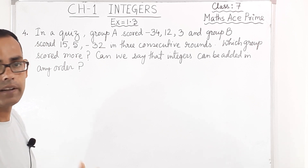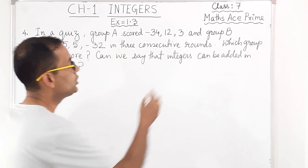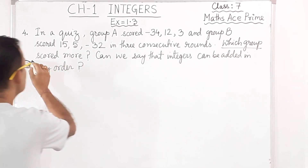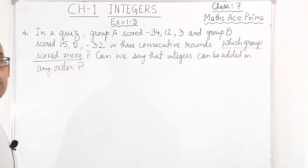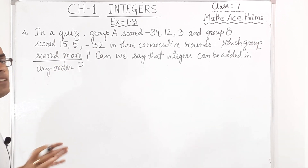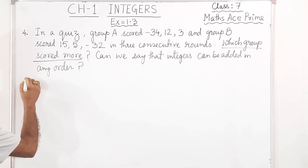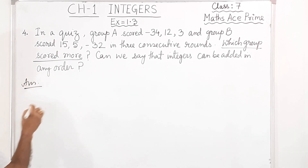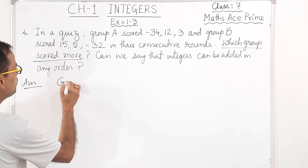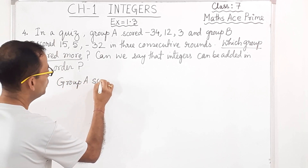So the question is: which group scored more? We have to find out whether Group A scored more or Group B scored more. It's a very easy sum. We will start the answer by writing Group A's score in three consecutive rounds.